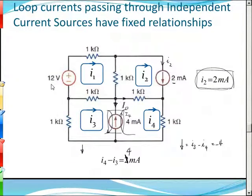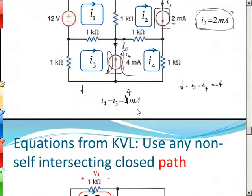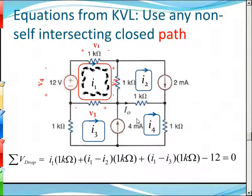We can get equations from using these independent current sources. The other source of equations is to apply Kirchhoff's voltage law. For any closed path, if we walk around it and sum up the voltage drops, we get zero. As we walk around this loop, the voltage drop equals the current in that direction passing through the resistor multiplied by the resistance — for instance, I1 times 1kΩ.